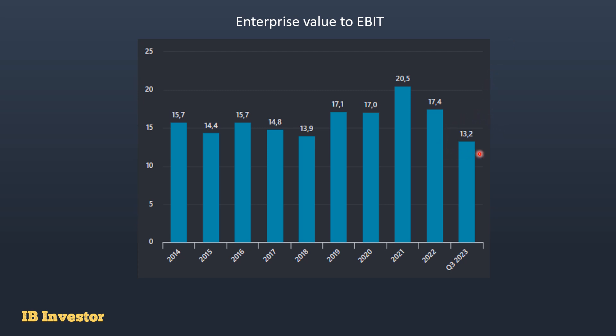For valuation, the EV/EBIT multiple currently sits at 13.2 times, which is not crazy and is actually the lowest it has ever traded at historically. There have been periods where the company traded at much higher multiples, similar to serial acquirers like Indotrade and Attech. However, we have to consider that numbers may be in decline, which would explain the market's worry and the recent share price weakness.